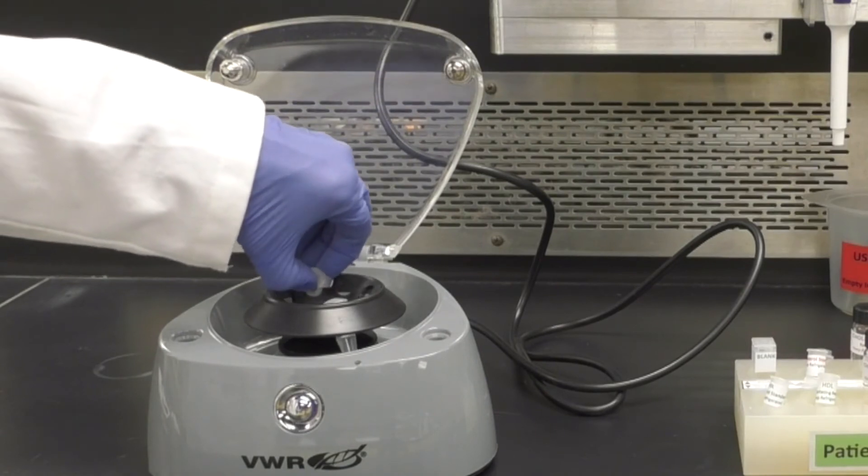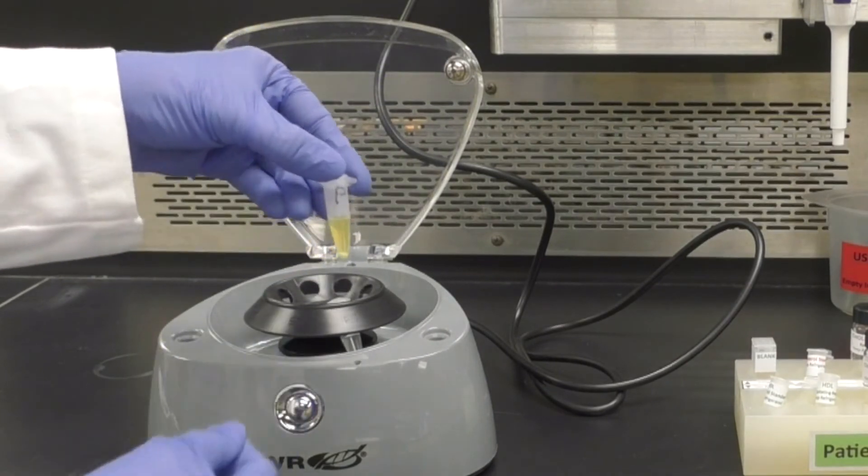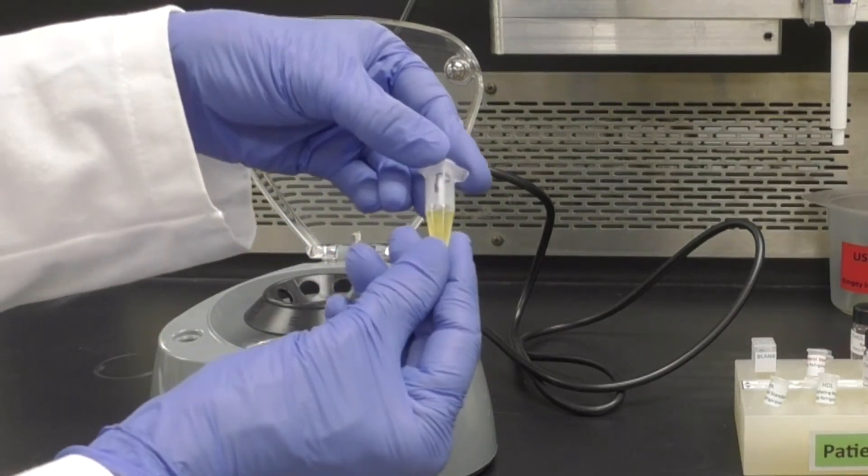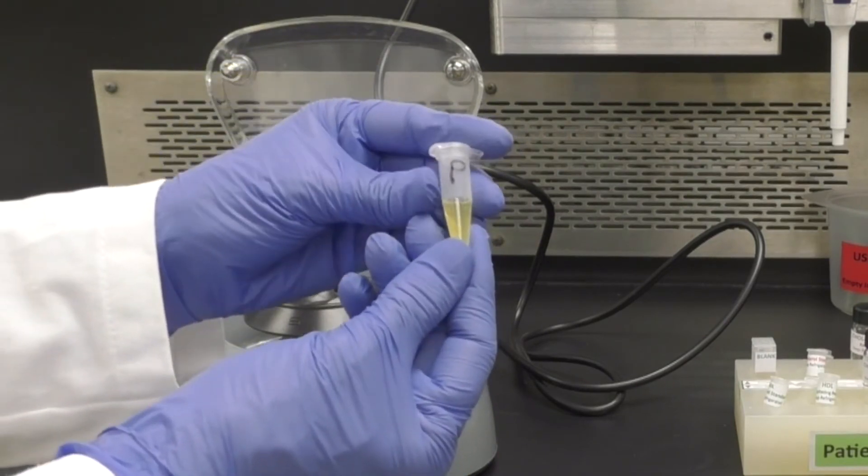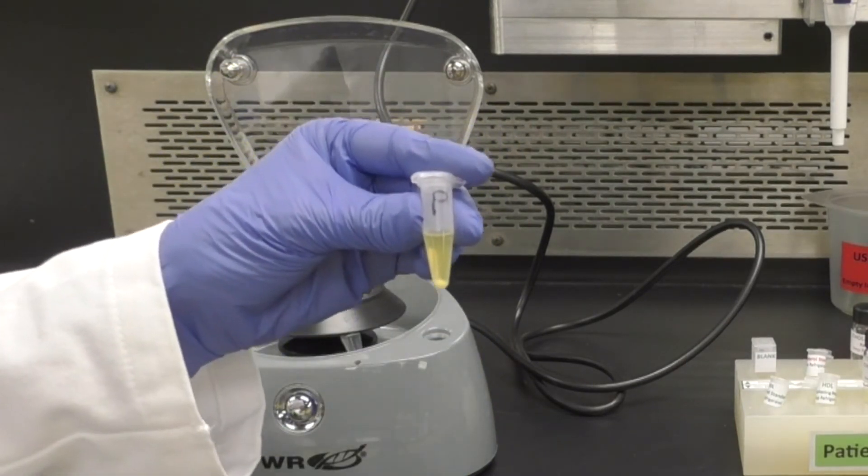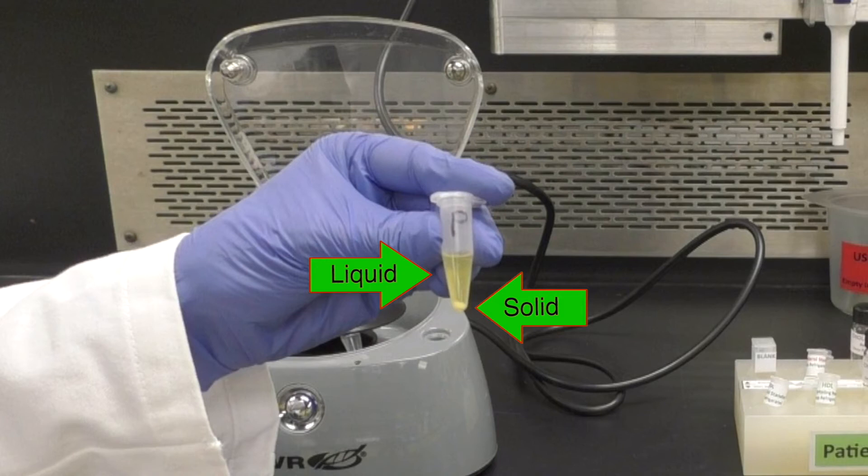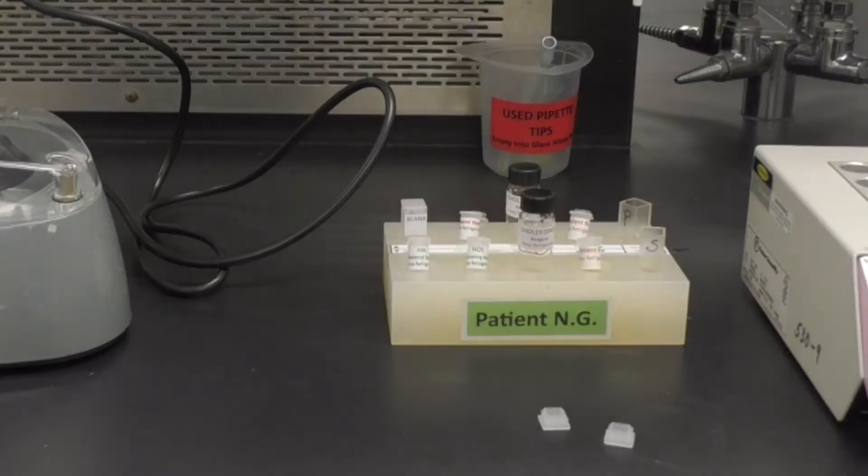Carefully remove your patient sample, taking care not to remix the contents. You should see a solid at the bottom of the tube and a light yellow liquid which contains just the HDL cholesterol above that. Remember to remove the balance tube also.